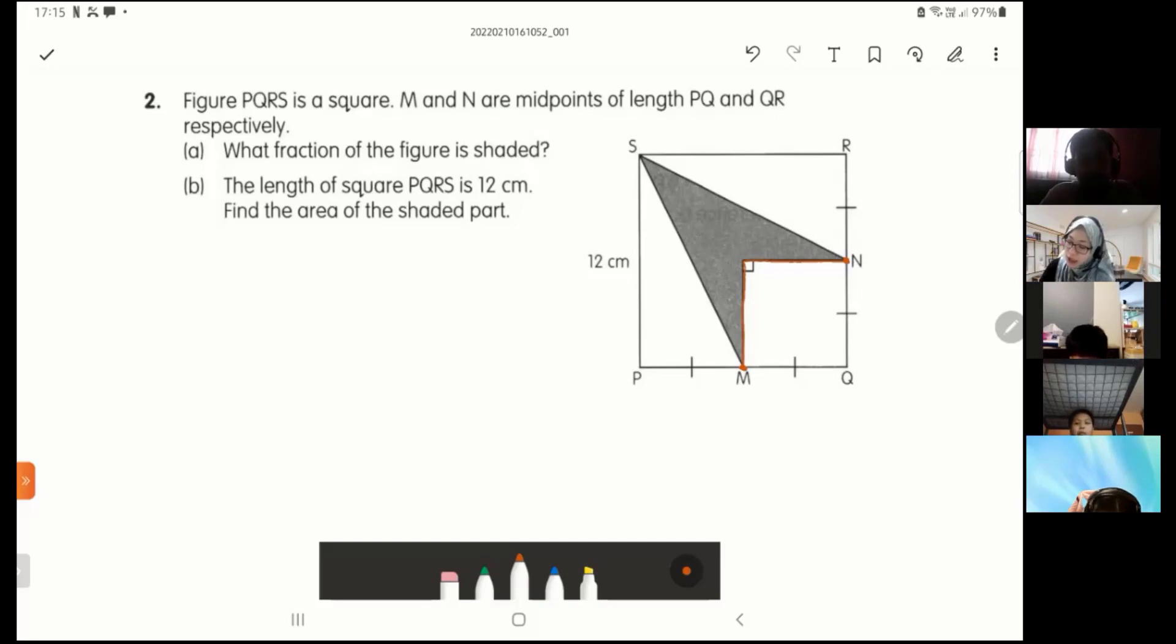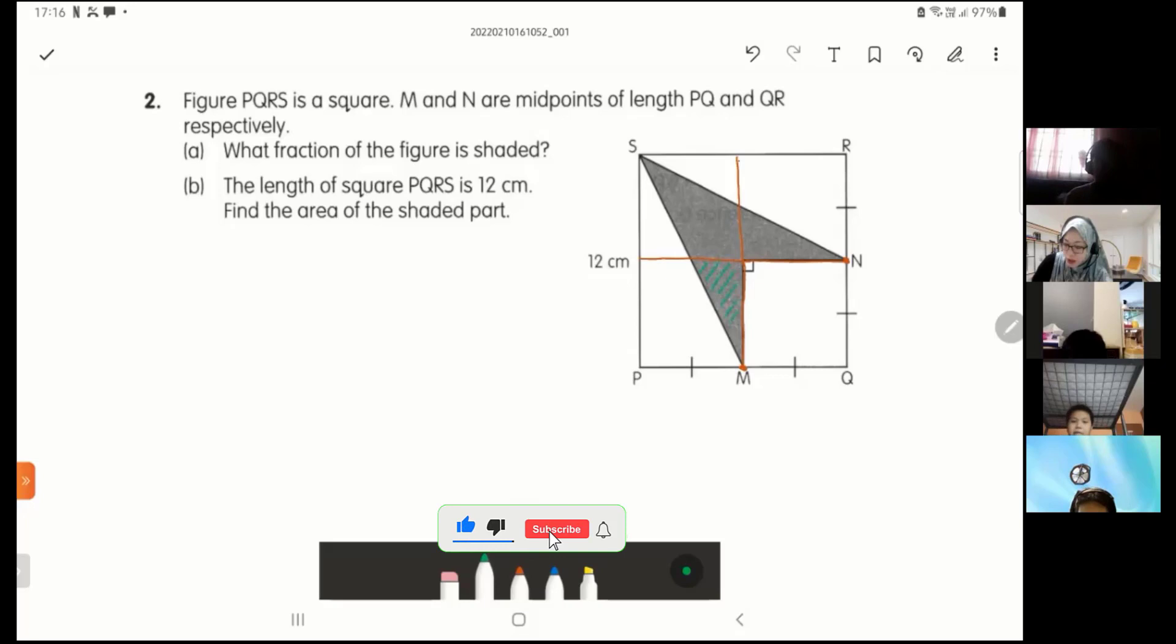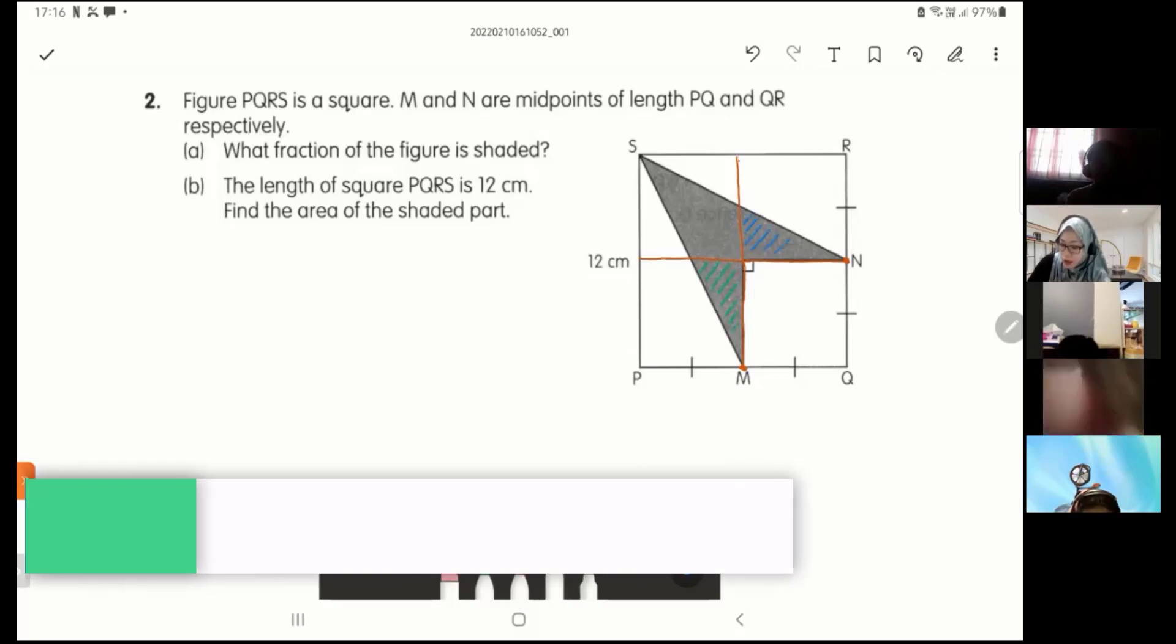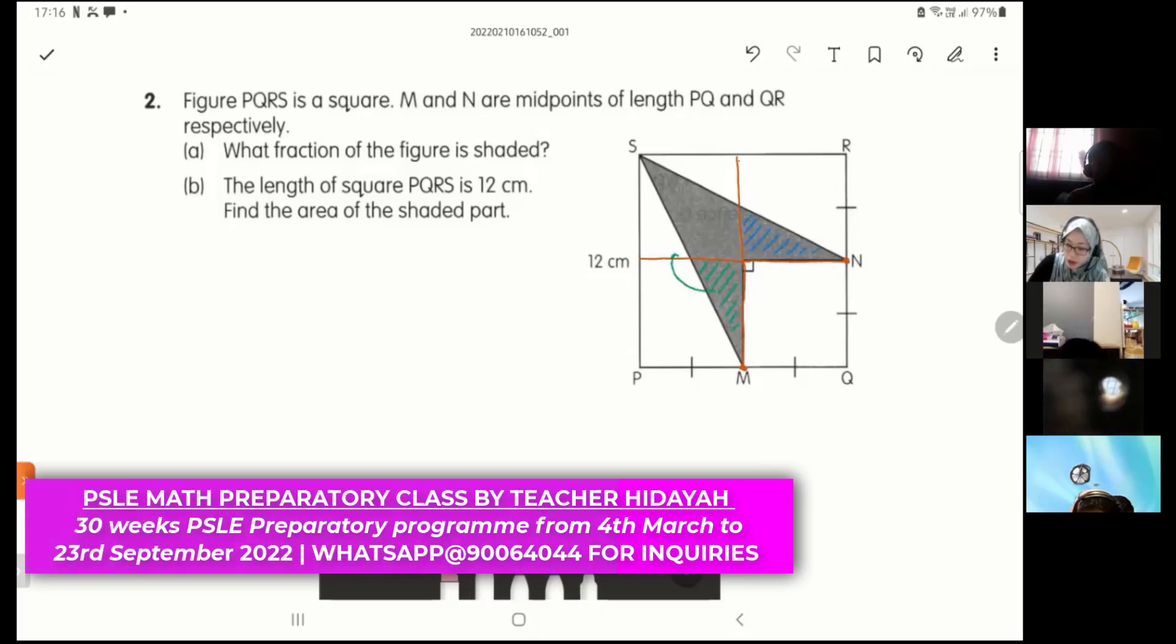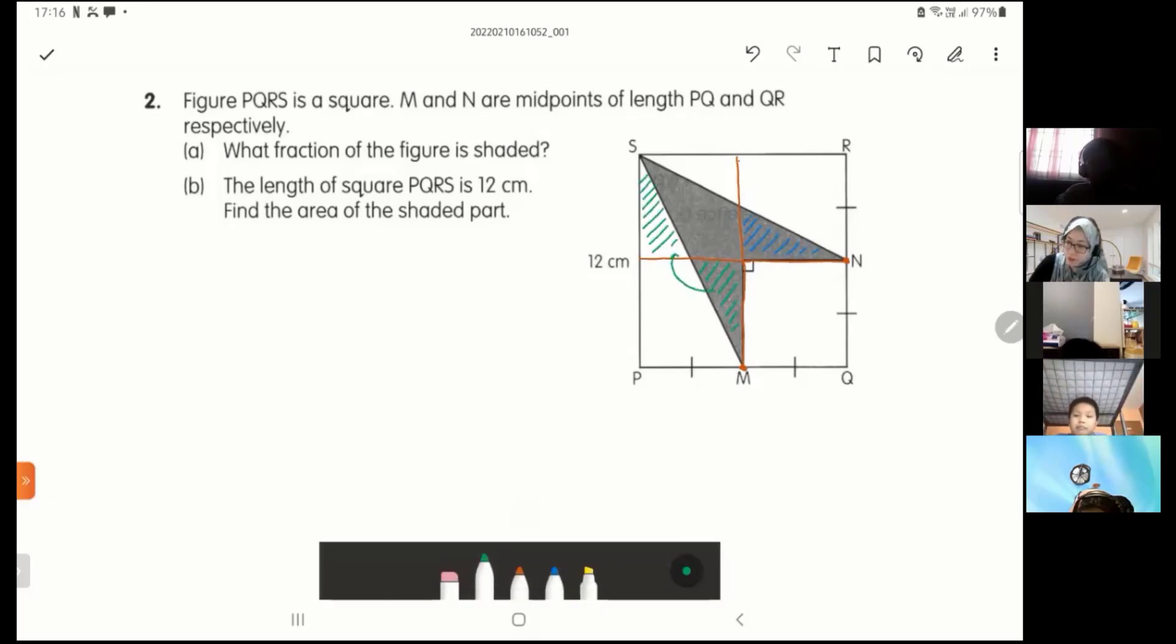What fraction of the figure is shaded? So I want to know what fraction of this figure is shaded. If you want, you can actually further cut the whole thing into parts. This is one way to do. And then when you actually do this, you can see that there are certain parts that we can move about. So for example, I use another color. This one I shade in green. Can you see?